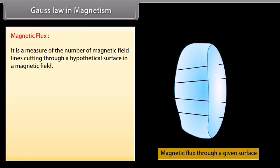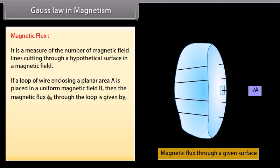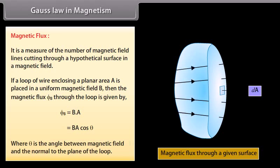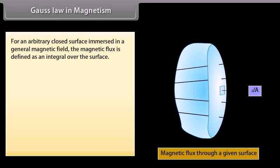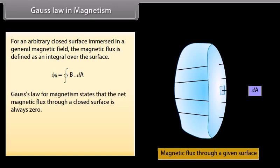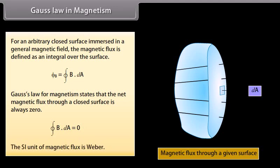Magnetic flux is a measure of the number of magnetic field lines cutting through a hypothetical surface in a magnetic field. If a loop of wire enclosing a planar area A is placed in a uniform magnetic field B, then the magnetic flux ΦB = B·A = BA cos θ, where θ is the angle between the magnetic field and the normal to the plane of the loop. For an arbitrary closed surface, ΦB = ∮B·dA. Gauss's law of magnetism states that the net magnetic flux through a closed surface is always zero: ∮B·dA = 0. The SI unit of magnetic flux is Weber.